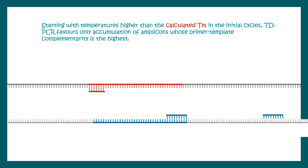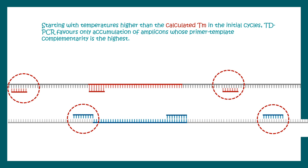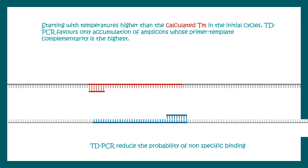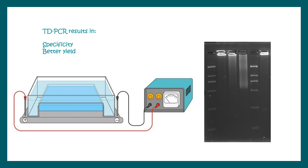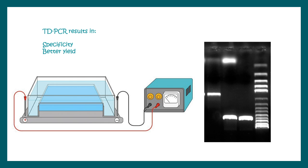In touchdown PCR, since the Tm is initially high, only highly specific primer-template pairing is allowed. Non-specific interactions that might occur are avoided at this higher temperature. In short, TD-PCR reduces the probability of non-specific binding, and instead of getting a smear, you get crisp bands and a nice yield.